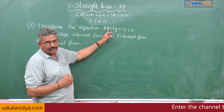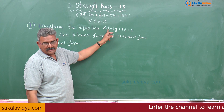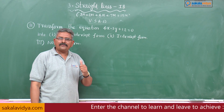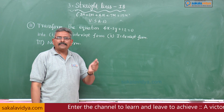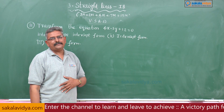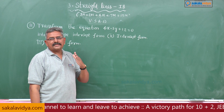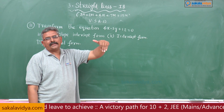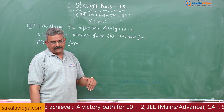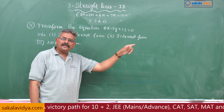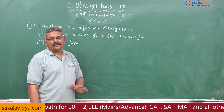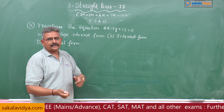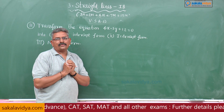It should be put in the form of x by a plus y by b equals 1 — that is the intercept form. The normal form is x cos alpha plus y sin alpha equals p, where alpha is the angle made by the perpendicular drawn from the origin to the line with the x-axis, and p is the perpendicular distance from the origin to the given line.